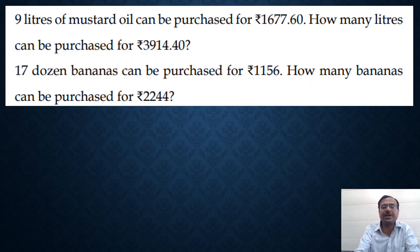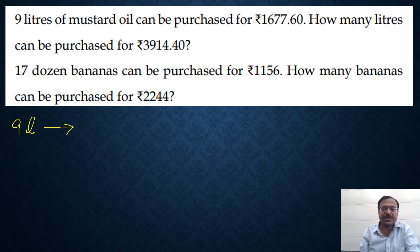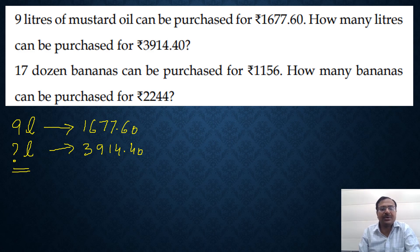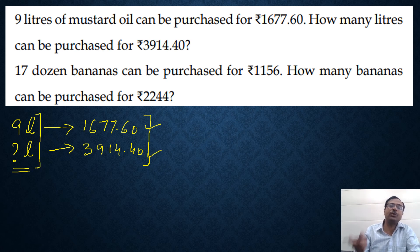Here we go — let's solve some questions of unitary method. First off, we have 9 liters of mustard oil. When there are two quantities given — in this case two amounts — and you have to find one unknown thing, always move in the reverse direction.